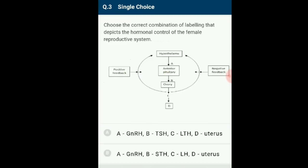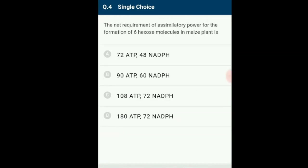Question number 3: Choose the correct combination of labeling that depicts the hormonal control of the female reproductive system. Question number 4: Oogenesis occurs under the influence of hormones. GnRH is secreted by the hypothalamus which stimulates the anterior lobe of the pituitary gland to secrete luteinizing hormone (LH) and follicle-stimulating hormone (FSH). FSH stimulates growth of ovarian follicles and development of the oocyte to complete meiosis 1 to form secondary oocytes. FSH also stimulates formation of estrogen. LH stimulates the corpus luteum to secrete progesterone. Ovulation is induced by LH. Both estrogen and progesterone act on the uterus. The correct answer is option D.